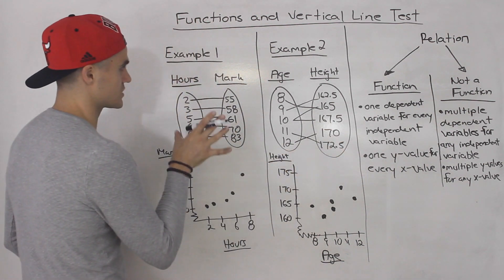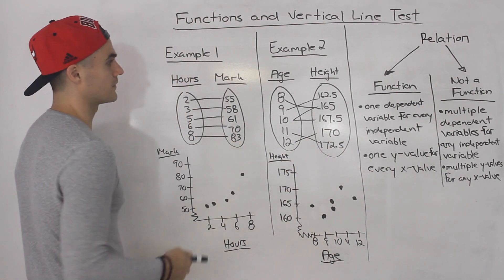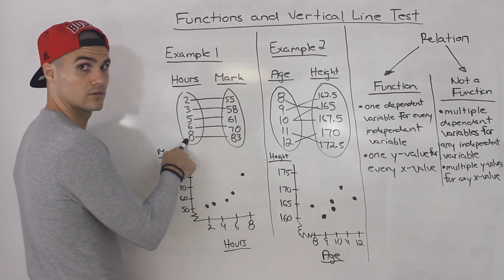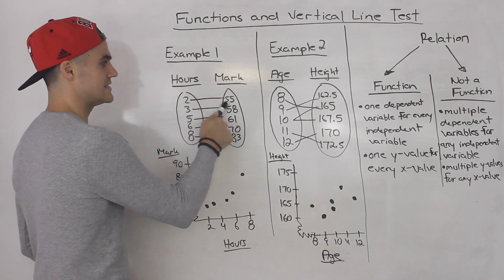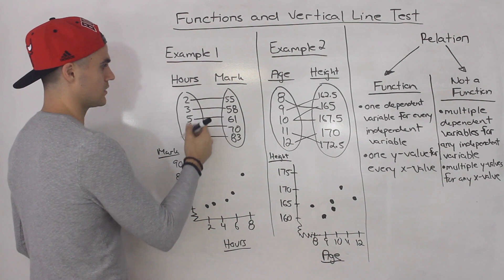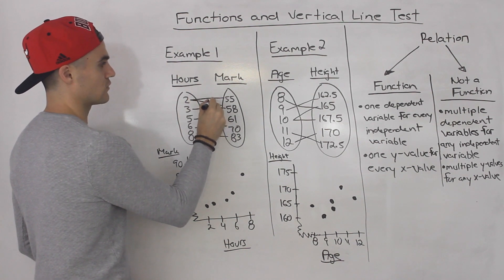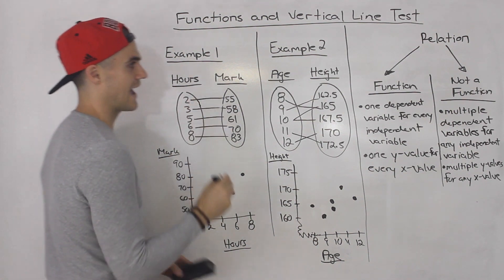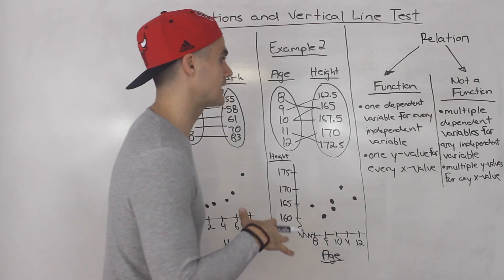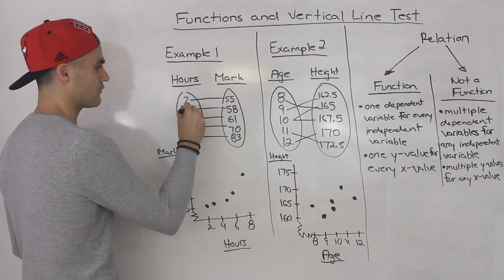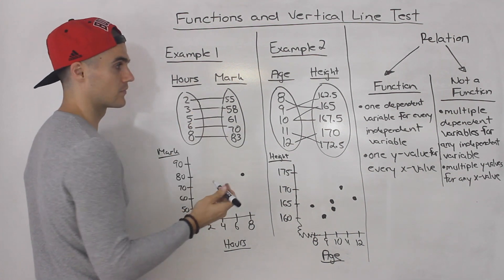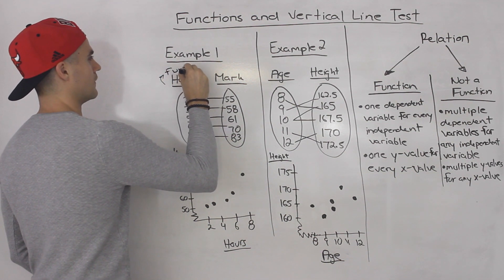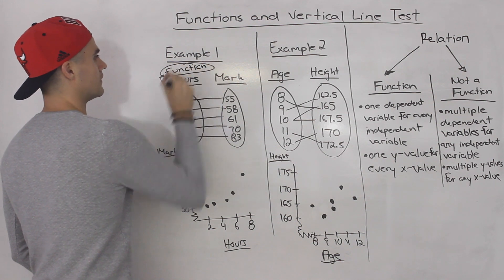Let's try to relate those definitions to these examples, starting with example one. Notice that in example one every independent variable has only one dependent variable. You don't see, like, the value two having a value of 55 and 58 — it just has a value of 55. So it doesn't have multiple dependent variables for any independent variable. Every independent variable has one corresponding dependent variable, which means that it is a function. Example one is a function.